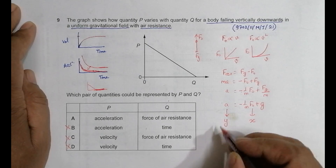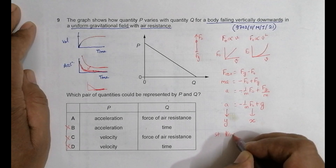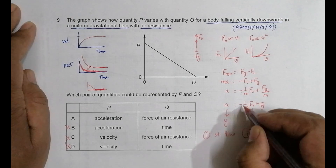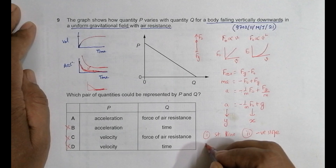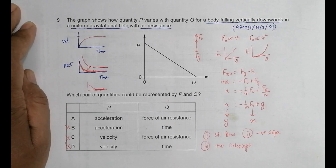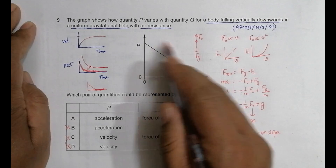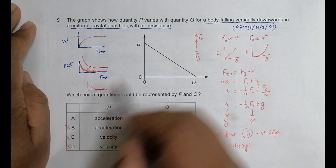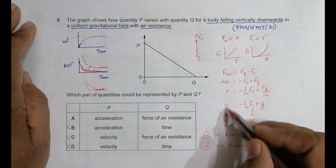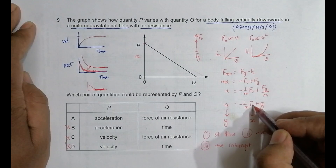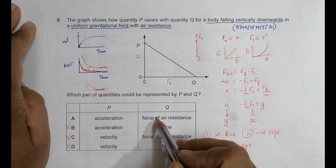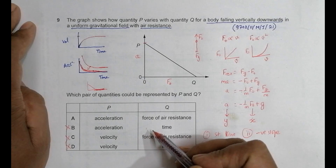If we plot a on the y-axis and F_o on the x-axis, this equation gives a straight line with a negative slope of −1/m and a positive y-intercept of g. All three properties — straight line, negative slope, positive intercept — are seen in the given graph. Therefore, P must be acceleration and Q must be the opposing force due to air resistance. Choice A is the correct answer.